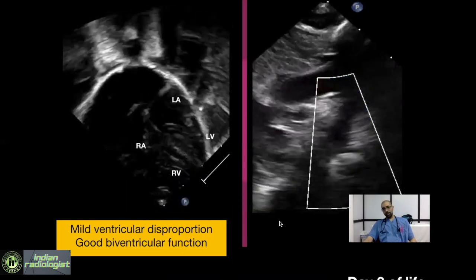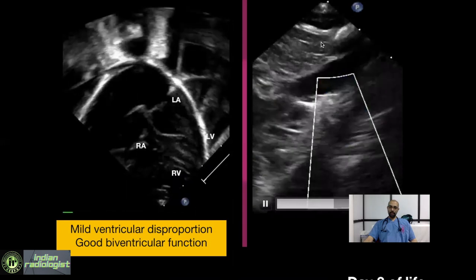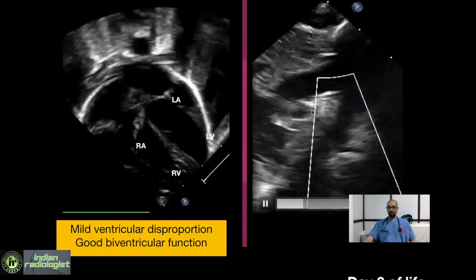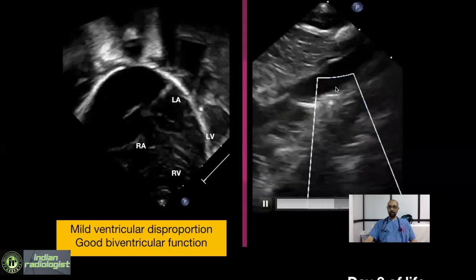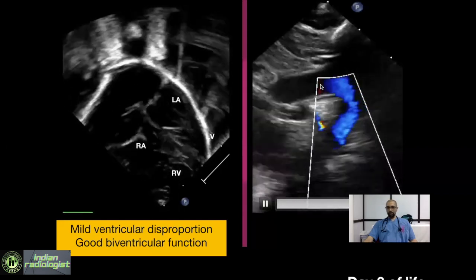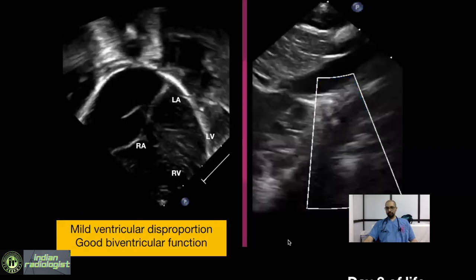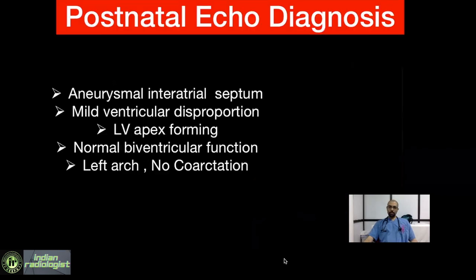The arch, which was our major point of concern and for which we had felt there was a high possibility of coarctation, showed the arch is well open and the flows through it are laminar. The postnatal diagnosis formulated was aneurysmal atrial septum, mild ventricular disproportion with LV being apex-forming, normal biventricular function, and left arch with no coarctation.